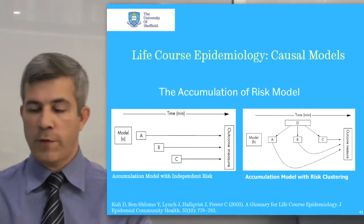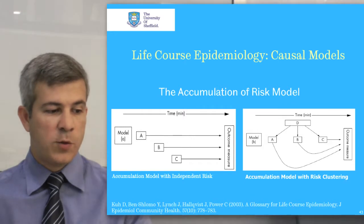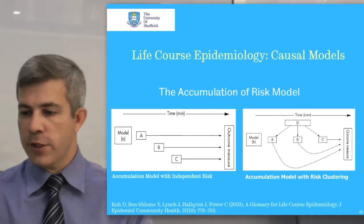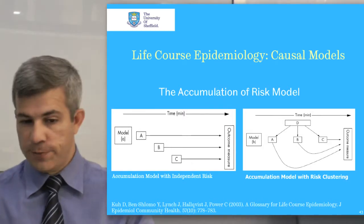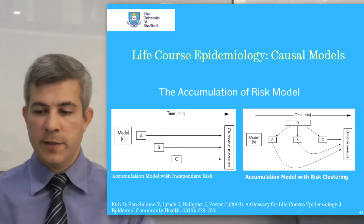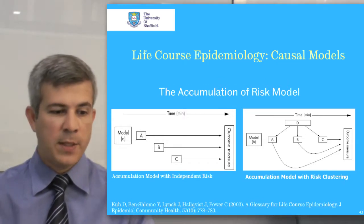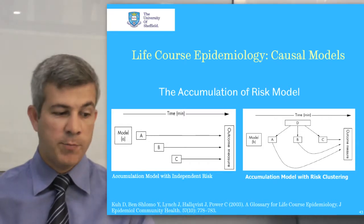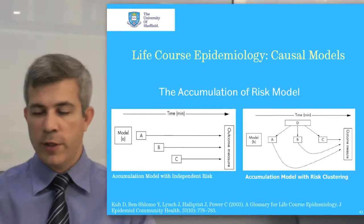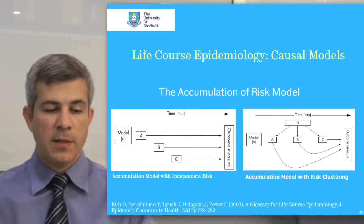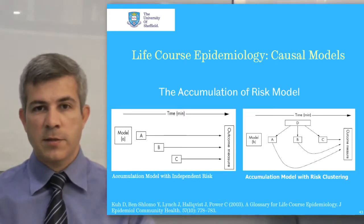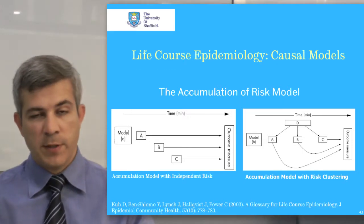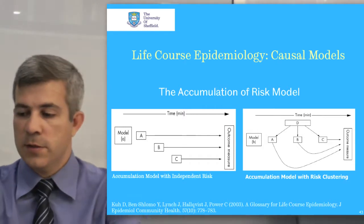The next model is the accumulation of risk model. The accumulation of different types of exposures — such as environmental, socioeconomic, and behavioral — may cause long-term damage. The exposure risk can be either independent, as illustrated in model A, or clustered, as in model B. The latter is known as the accumulation model with risk clustering. Life course epidemiology shares with social epidemiology a particular interest in clustered exposures, because they are often related to individuals' or family socioeconomic position in society.